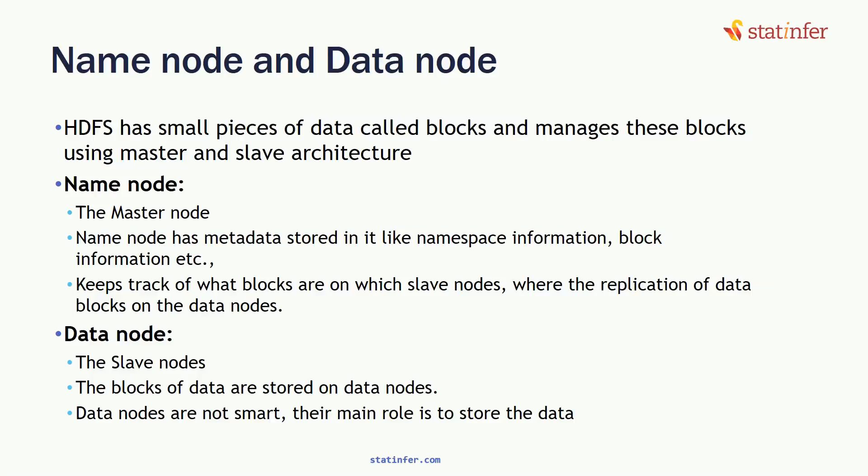The remaining nodes are data nodes or slave nodes — they just take blocks of data, store them, and run the MapReduce task. Data nodes are not smart; their main role is just to store data. The name node, as master node, keeps track of all data nodes and slave nodes, and also keeps track of namespace information, block information, and metadata information.